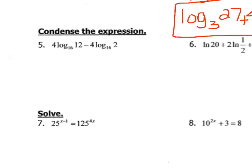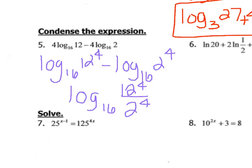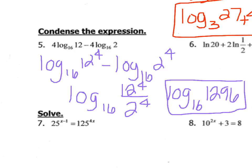Number 5 works in the opposite direction — this time I'm condensing. Whenever we're condensing, the first thing we're looking for are exponents, and we find those based on what the coefficients are. I'm looking for coefficients to make into exponents, then I need to condense. Since I have subtraction, I know I'm condensing with division. Then I go a step further and figure out what 12 to the 4th and 2 to the 4th are, and I get log base 16 of 1296.